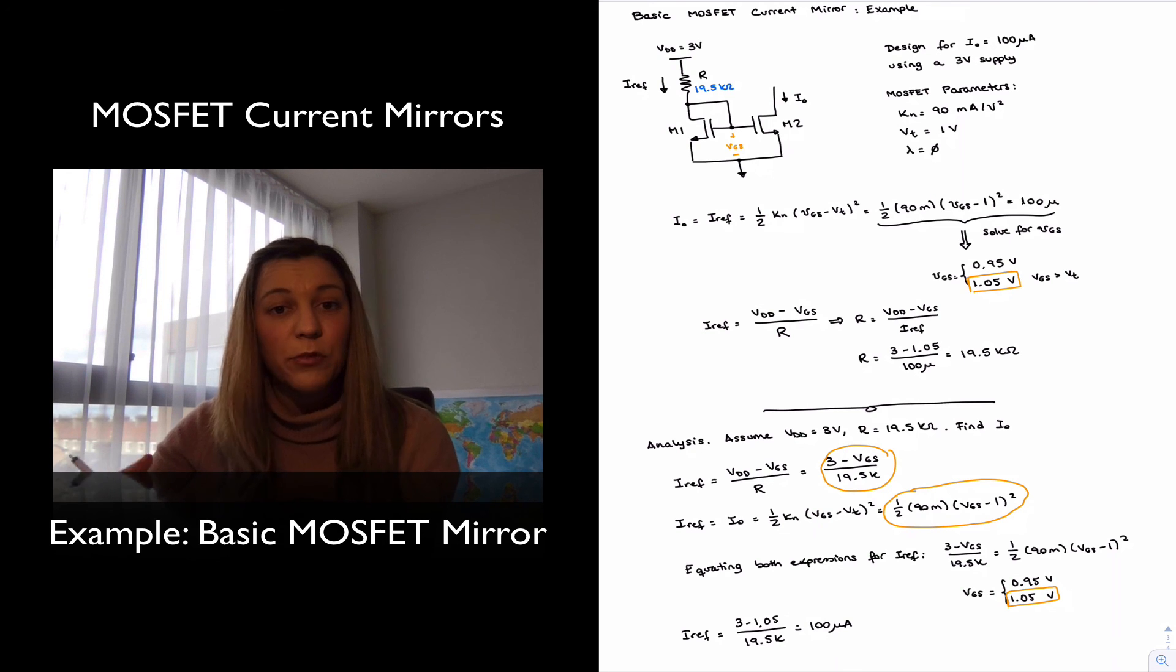So this will be the generic procedure for either designing a current mirror for a particular current or analyzing a current mirror to figure out the current through it. Thank you.